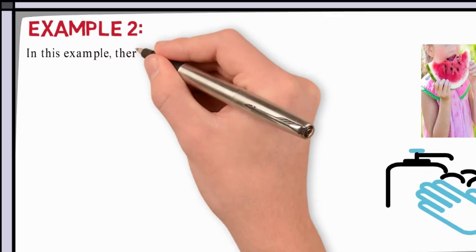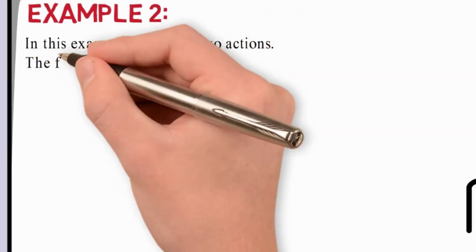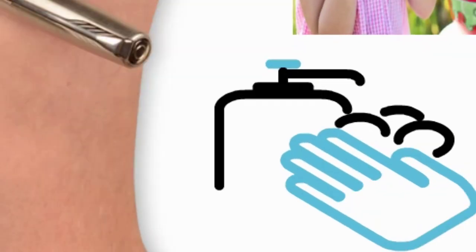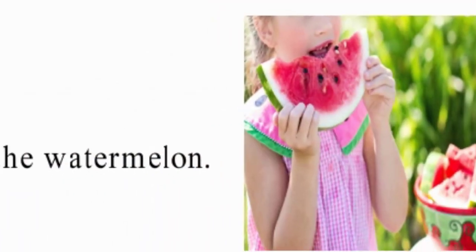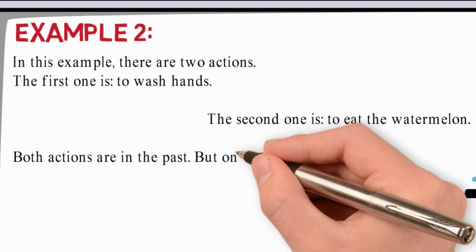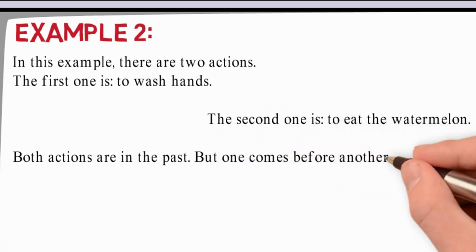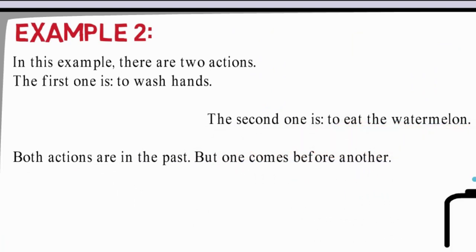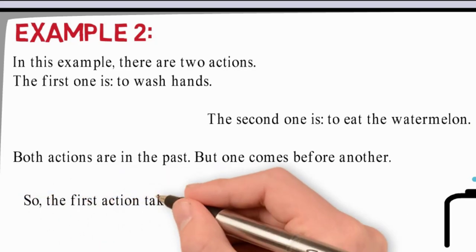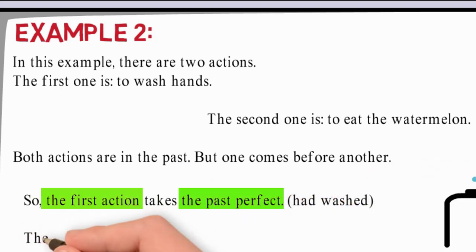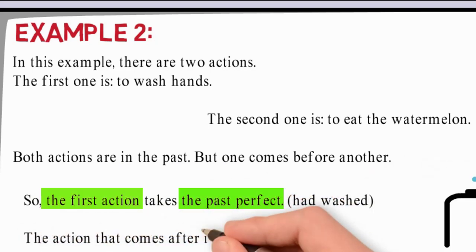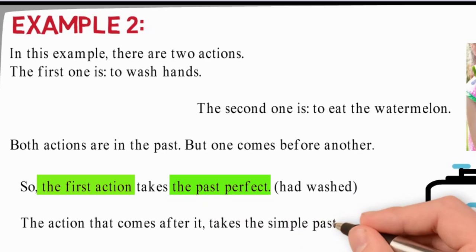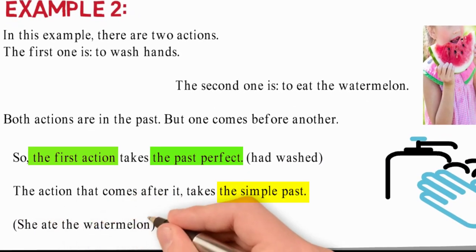In Example 2, there are two actions. The first one is to wash hands, the second one is to eat the watermelon. Both actions are in the past, but one comes before another. So the first action takes the past perfect simple: had washed. The action that comes after it takes the simple past: she ate the watermelon.